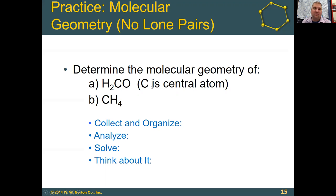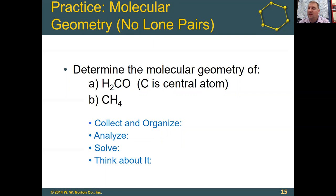For these two molecules: CH4 was actually shown earlier. CH4 would have a steric number of four, which means it's tetrahedral. H2CO — the two H's would be bonded to the carbon with single bonds, and the oxygen would be bonded to the carbon with a double bond. That means there would be three bonded atoms around the carbon, giving a steric number of three, so it would be trigonal planar.